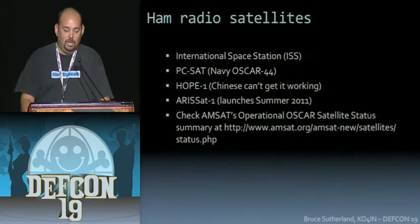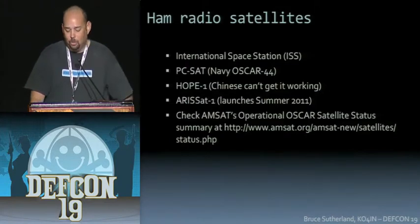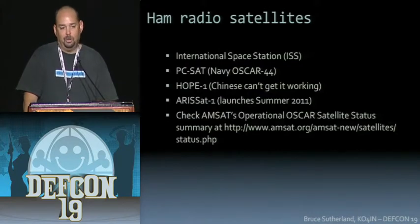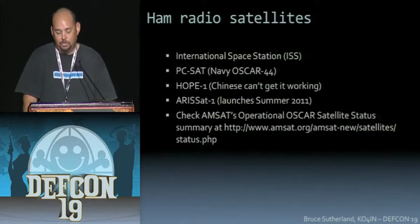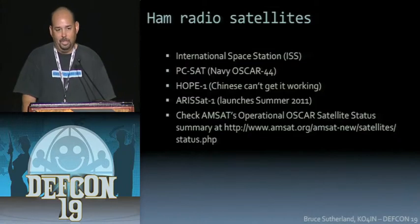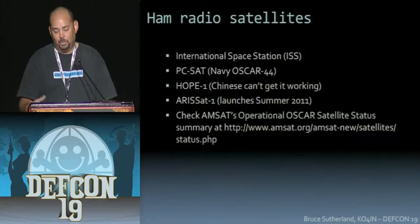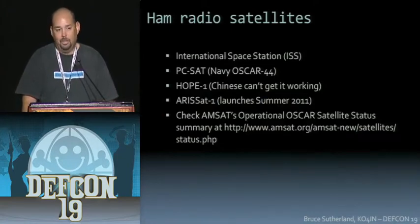You can also go to AMSAT.org — they have a really nice matrix of all the satellites that do amateur radio functions, and they tell you which ones are up, down, or intermittent. The individual satellites usually have their own website explaining what frequency they're on, how to use them, how to set your DigiPath, and things like that.